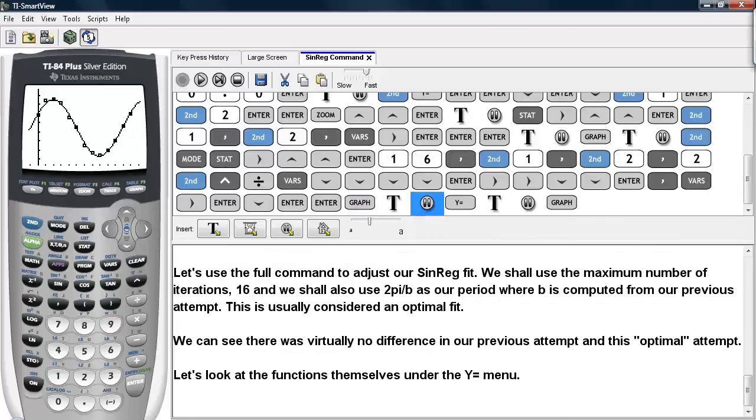We can see there's virtually no difference in our previous attempt and this optimal attempt. So let's look at the functions and see what the differences are.